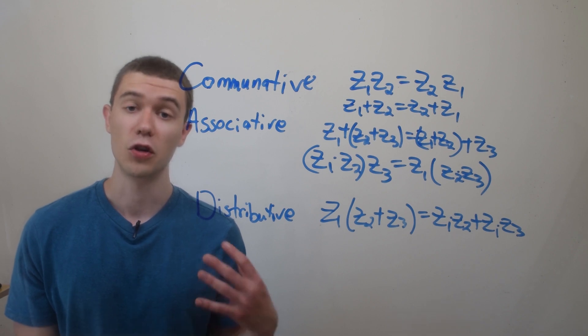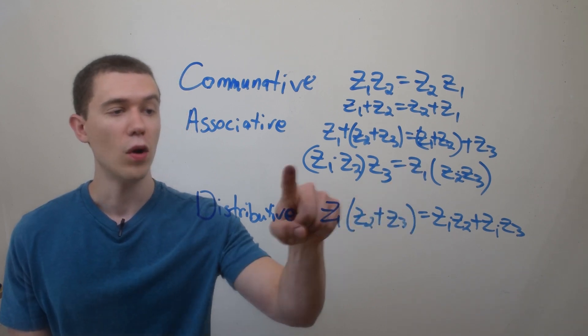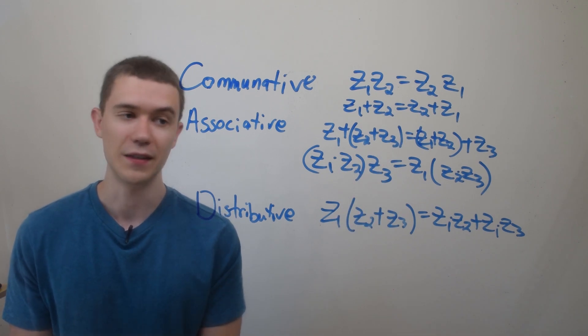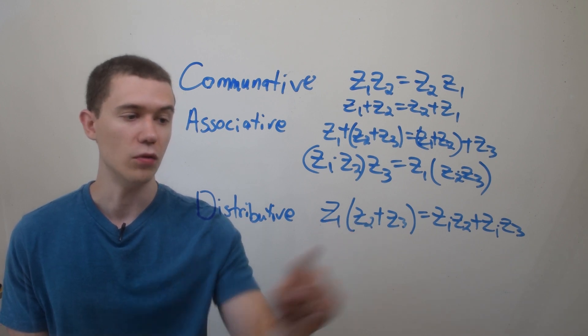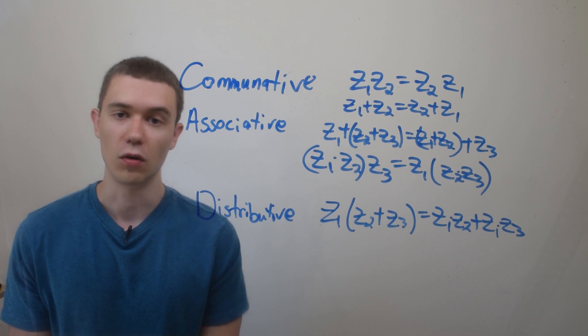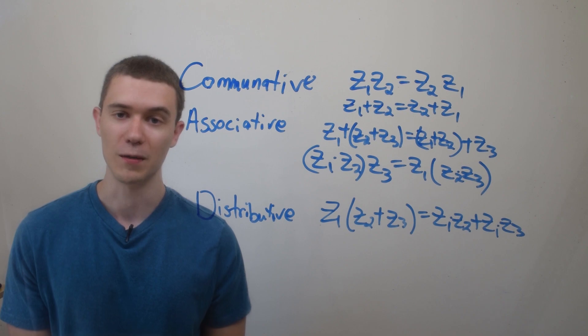We also have associativity of addition and multiplication. That means where I put the parentheses, the order of the parentheses doesn't matter in this form. And we also have the distributive law that I can distribute multiplication across the parentheses like this. So we need these laws in place, now we can do complex arithmetic.